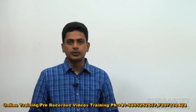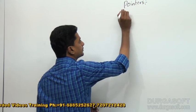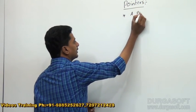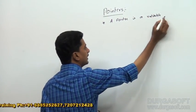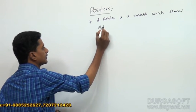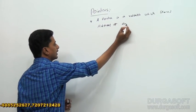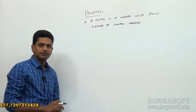Today I am going to discuss about pointers in C#.NET. A pointer is a variable which stores the address of another variable.